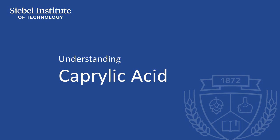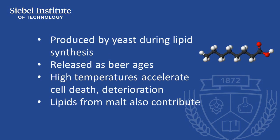Fatty acids are produced by yeast during lipid synthesis and are released into beer as yeast ages. As yeast is stored in beer, it will lose vitality and the cell membrane permeability will increase. This will result in release of short-chain fatty acids into beer, followed by cell death and further release of fatty acids. Higher temperatures will accelerate cell deterioration and death, eventually leading to production of this compound.